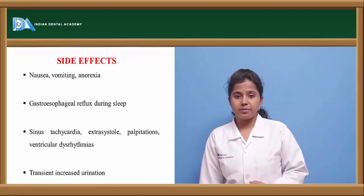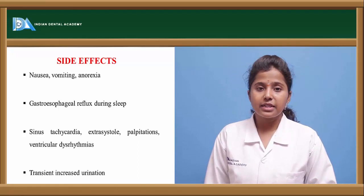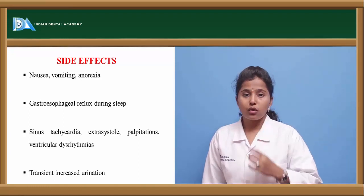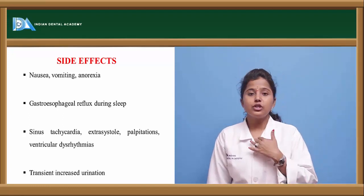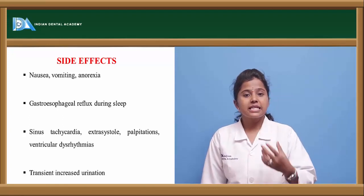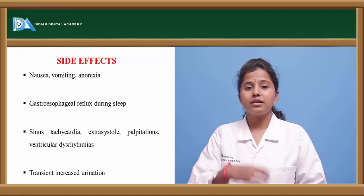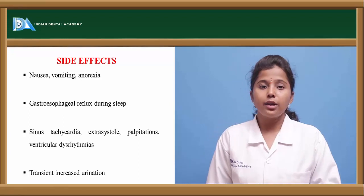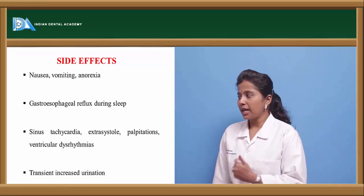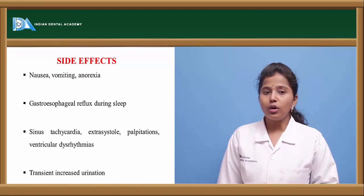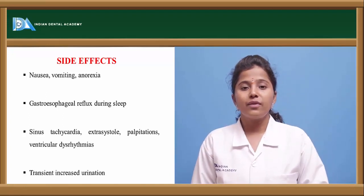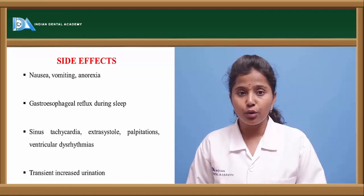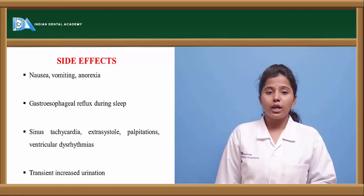What are the side effects of these methylxanthins? Methylxanthins have common side effects like nausea, vomiting, and anorexia. Anorexia is a condition causing loss of appetite, and it also causes gastroesophageal reflux — gastric contents are regurgitated into the esophagus or oral cavity. Other side effects include sinus tachycardia, extrasystoles, and transient increase in urination. There will be disturbances in heartbeat and cardiac contractions if methylxanthins are taken in larger doses, and they cause increased or frequent urination.